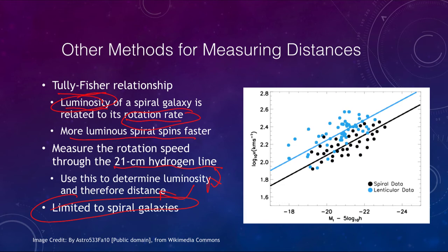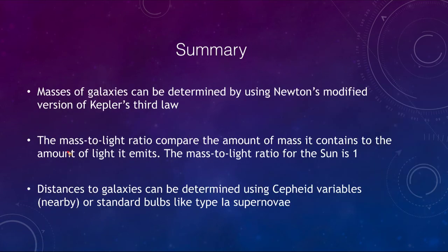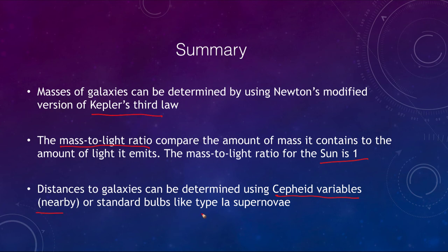To summarize: the masses of galaxies can be determined by several methods including Newton's form of Kepler's third law. We use the mass-to-light ratio to compare the amount of mass a galaxy contains to the amount of light it emits, with the sun as the reference point of one. Distances to galaxies can be found using Cepheid variables for nearby galaxies, or standard candles like type 1a supernovae going out toward the edge of the universe. That concludes this lecture on galaxy properties and distances — we'll be back next time for another topic in astronomy. Have a great day everyone!